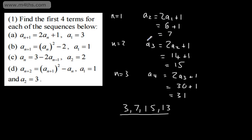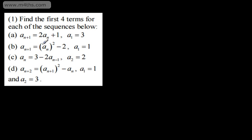You might say to yourself that in an exam you don't need to write out a3 is equal to 2a2 plus 1 — simply substitute these in. As long as you're showing adequate working, you'll be given the credit. Now let's look at part b.